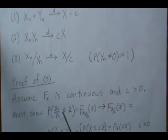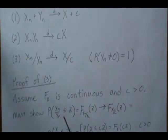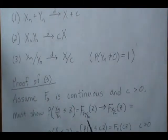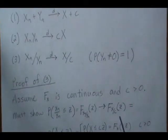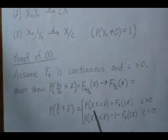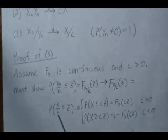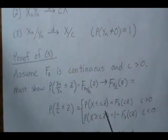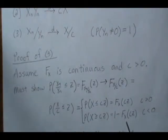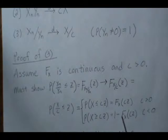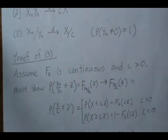The distribution function F of Xn/Yn evaluated at Z converges to F of X/C. That distribution is the probability that X/C is less than or equal to Z, and we can multiply C across. If C is positive, we get F_X(CZ), and if it's negative it's 1 minus that in the continuous case. In the discrete case it approaches the left limit.